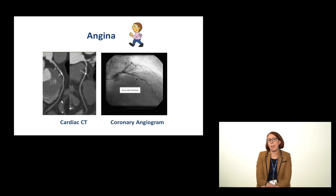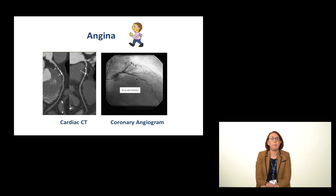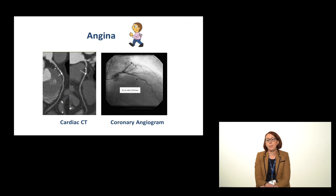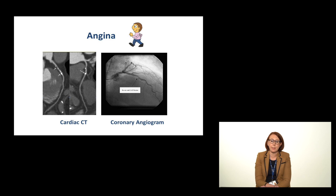Here you can see the investigation of choice in a patient who has symptoms suggestive of angina. The first line test we do is a cardiac CT, and some of you watching this will have had a cardiac CT. It's a very easy test. It takes about 10 minutes and it's non-invasive, meaning we don't have to stick any tubes into any arteries. We inject some contrast dye into a vein and that lights up the arteries in your heart. You can see on the left side of the panel this is the picture we get with the cardiac CT. Where the arrow is pointing you can see very dense white material. This is calcium, and where there's calcium there's plaque.